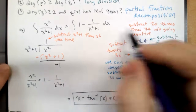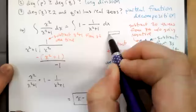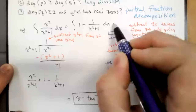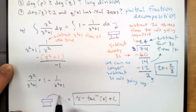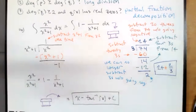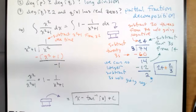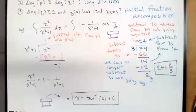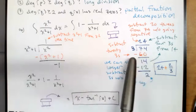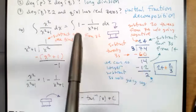Let me rewrite the integral. x²/(x²+1) equals 1 minus 1/(x²+1). The problem was the degree of the numerator was greater than or equal to the denominator, so we used long division to rewrite the integrand into one of the three forms we already know, plus a polynomial — that's the mixed number part. This x²/(x²+1) is like 74/3, and 1 minus 1/(x²+1) is like 24 and two-thirds.